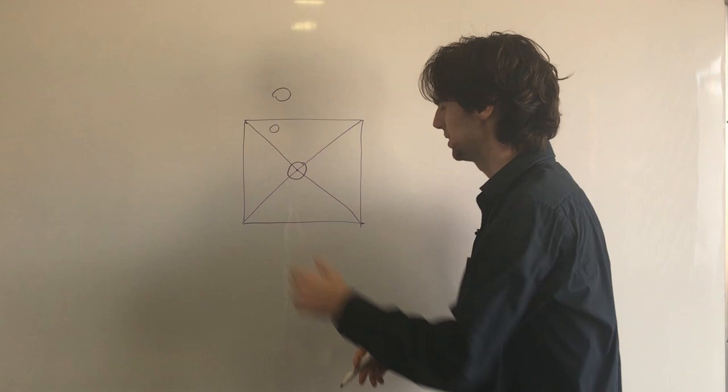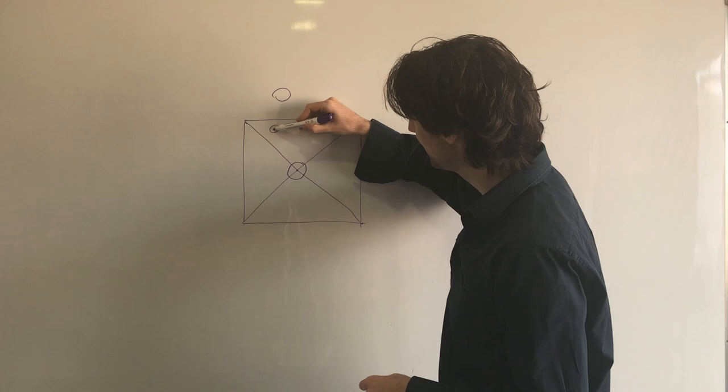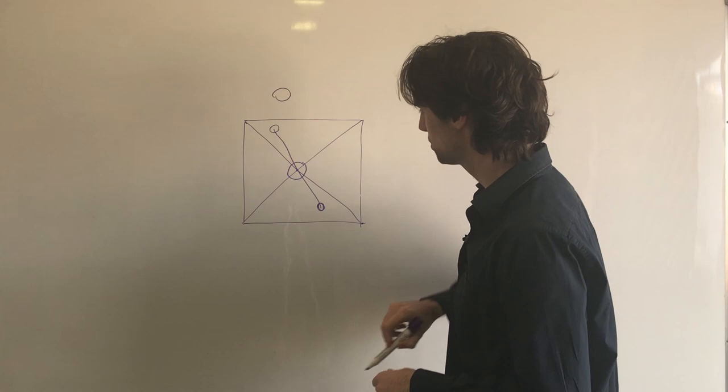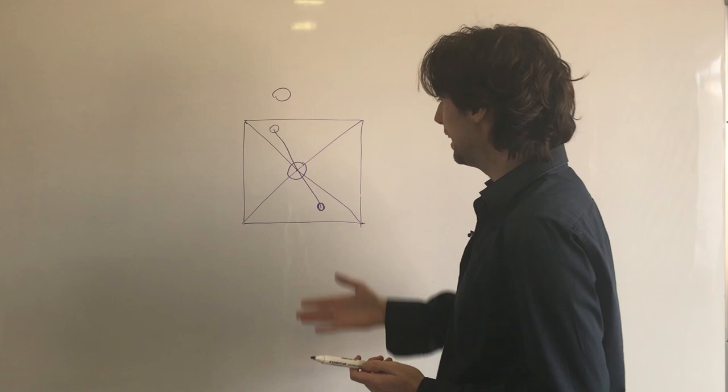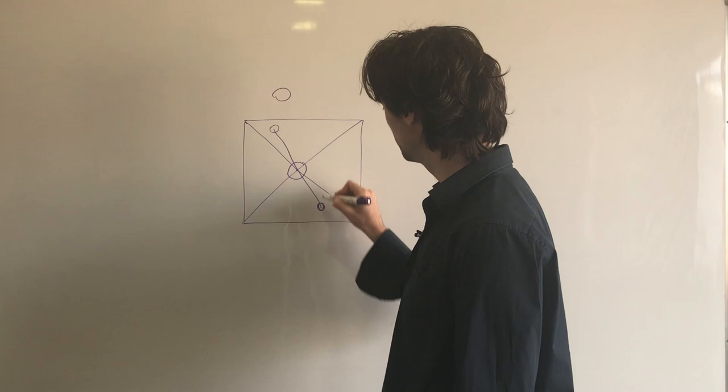The coins are of the same size. Then you can literally copy this by translating this play over the center of the square. And then you play here. And the other thing is, if the other player can make a move, then so can you.